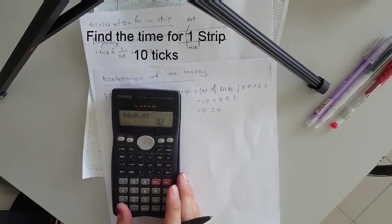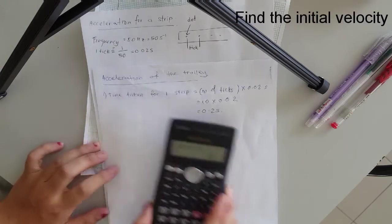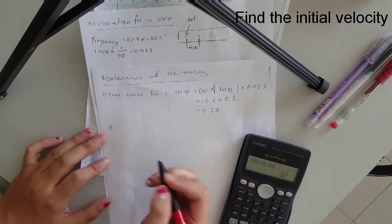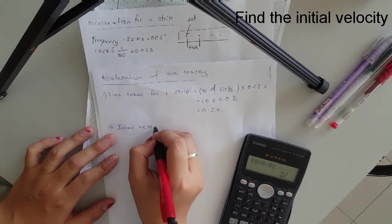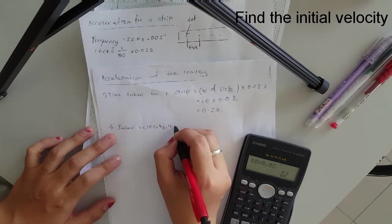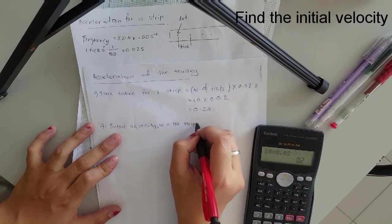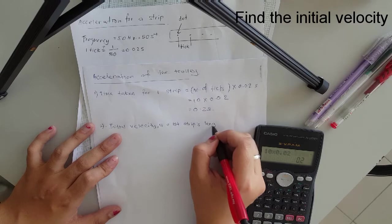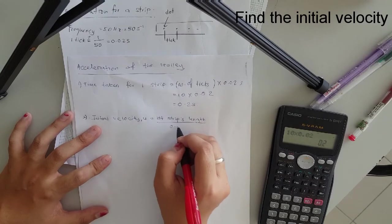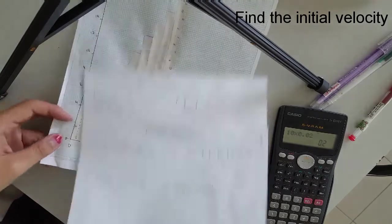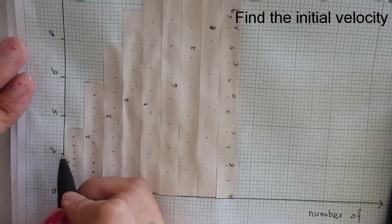So after that we need to find the initial velocity. So number two. To find the initial velocity, the initial velocity, which is U, which is U, is actually the first strips bank divided by this time taken for one strip which is 0.02 seconds. So my first strip bank. Let's go back here. That's why I used a graph. So this is two. This is three.